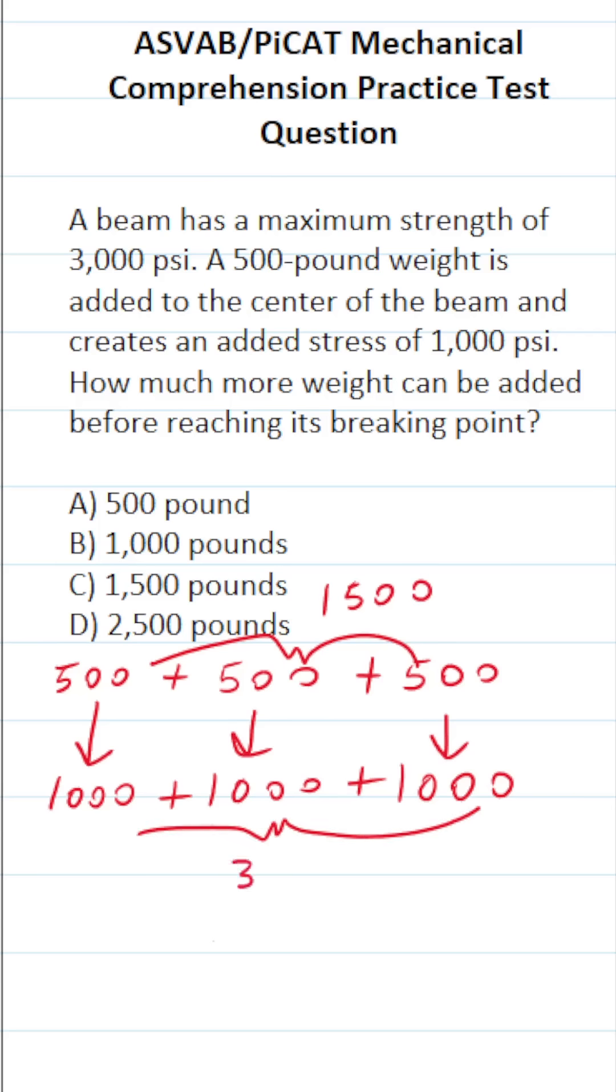And this corresponds to 3,000 PSI, which according to the problem, is the breaking point of the beam. So again, this question asks: how much more weight can be added after the initial 500 pounds to reach the breaking point of the beam?